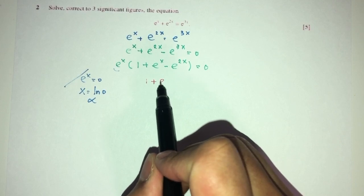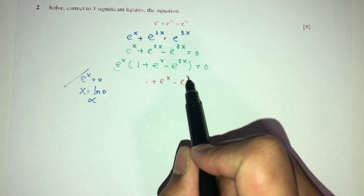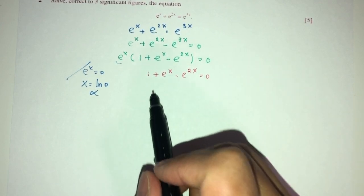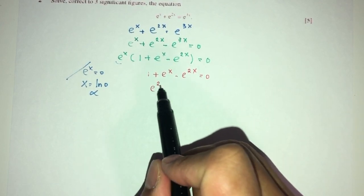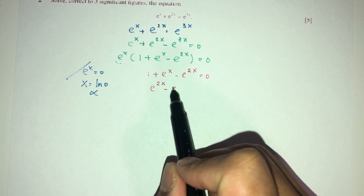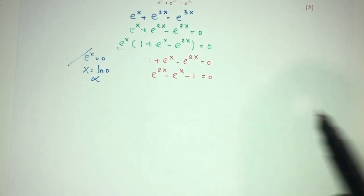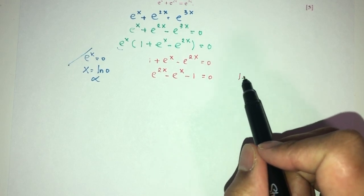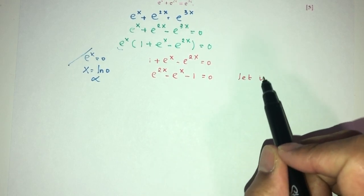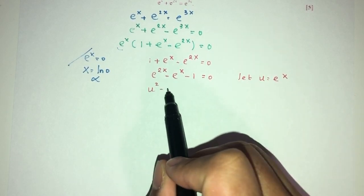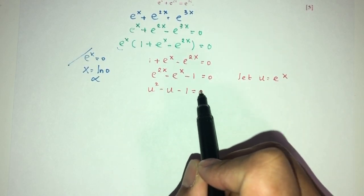So, we have one more here which is 1 + e^x - e^(2x) is 0. Now, we can rearrange. That will become e^(2x) minus e^x minus 1 is 0. Now, I can do something because it is kind of hard to work with this right now. Let u be e^x. So, you will have u² - u - 1 is 0.